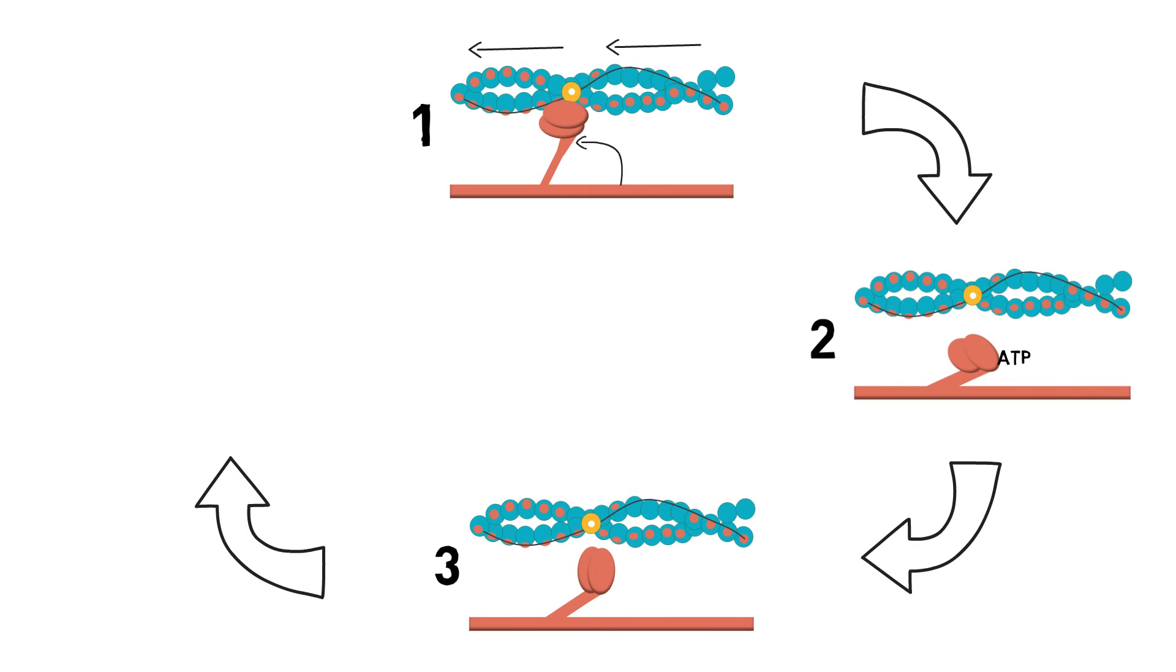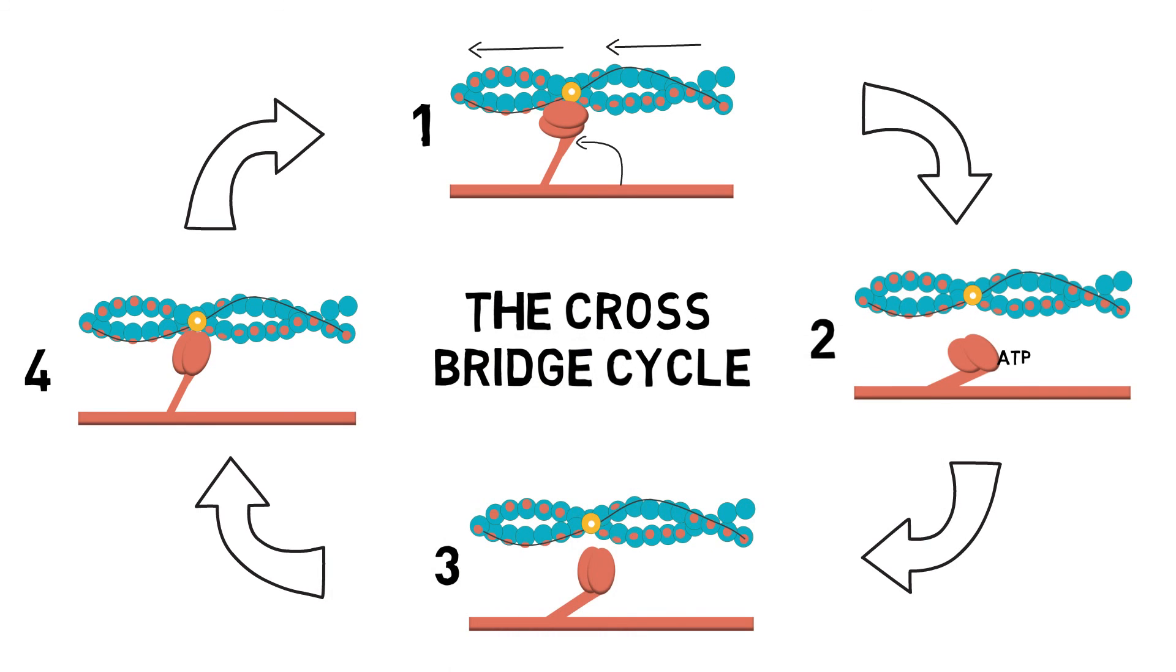The continuous attachment and detachment of the crossbridge creates a ratchet mechanism that contracts and relaxes skeletal muscle. Although this happens at a microscopic level, it will be taking place throughout the whole muscle.